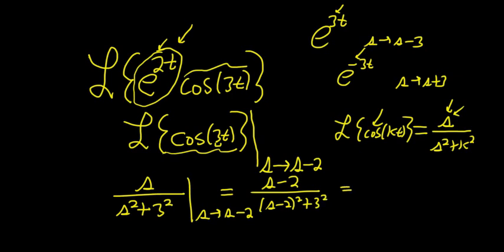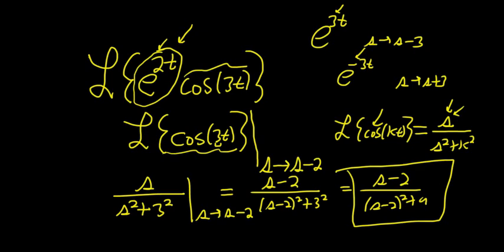Then you just simplify the 3, so it would be s minus 2 over s minus 2 squared plus 9. That was super quick, but just wanted to make a really quick video to show you.